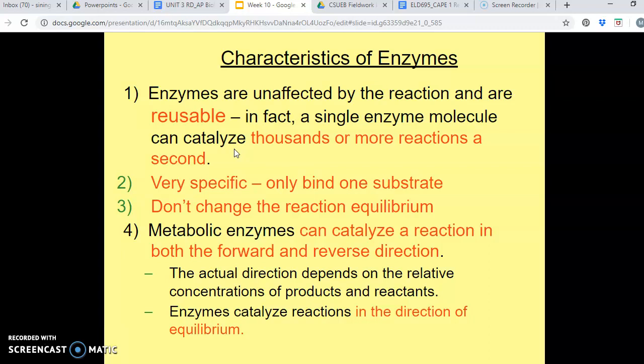So in the earlier video, when I brought to you the idea behind the equilibrium constant, we're going to revisit that again, and it's actually a particular concept called enzyme kinetics, and we'll go over that. And then number four, metabolic enzymes can catalyze a reaction in both the forward and reverse direction, so they are reversible reactions. And the actual direction depends on the concentrations of the products and the concentrations of the reactants. And then enzymes will catalyze reactions in the direction of equilibrium.